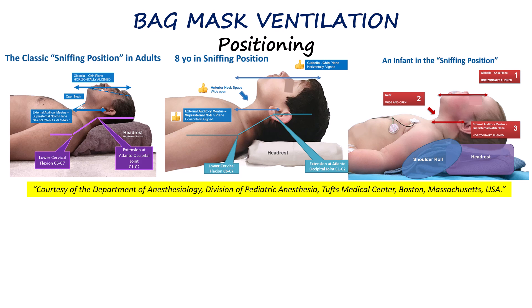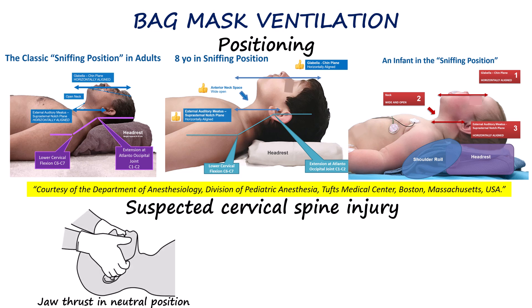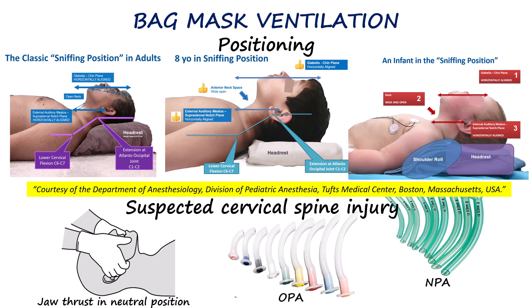As shown in the pictures here, the infant is positioned with a headrest along with a shoulder roll to achieve the sniffing position. If a cervical spine injury is suspected, the sniffing position should not be attempted. Instead, the head must be kept in a neutral position, and a continuous jaw thrust should be applied to lift the tongue away from the posterior pharynx. If airflow remains obstructed, an oropharyngeal or nasopharyngeal airway can be inserted promptly to keep the passage clear before and during mask ventilation.